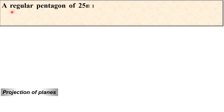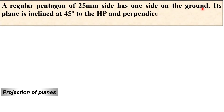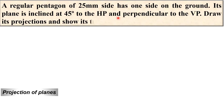Let us see first of all the description of the given problem. A regular pentagon of 25 mm side has one side on the ground. Its plane is inclined at 45 degrees to the HP and perpendicular to the VP. Draw its projections — that means you have to draw the front view and top view, which are ultimately called the traces.